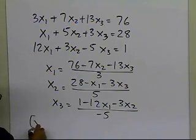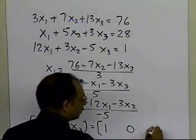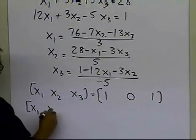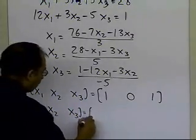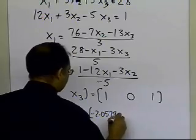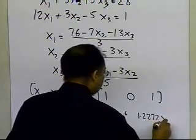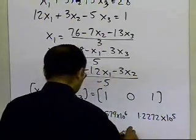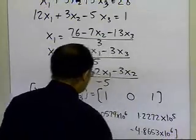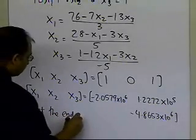And in this case, when I start with the initial guess, same as previously, I start again with the initial guess of 1, 0, 1, so nothing has changed so far as the initial guess is concerned. But when I conduct six iterations, this is what I get for x1, x2, and x3. I get -2.0579 × 10^6 for x1. For x2, I get 1.2272 × 10^5. And for the third one, I get -4.8653 × 10^6. This is what I get at the end of sixth iteration.